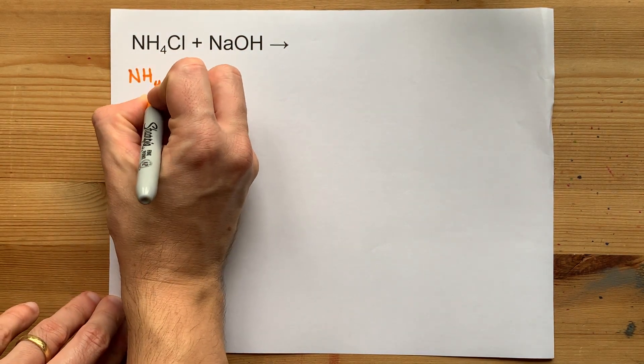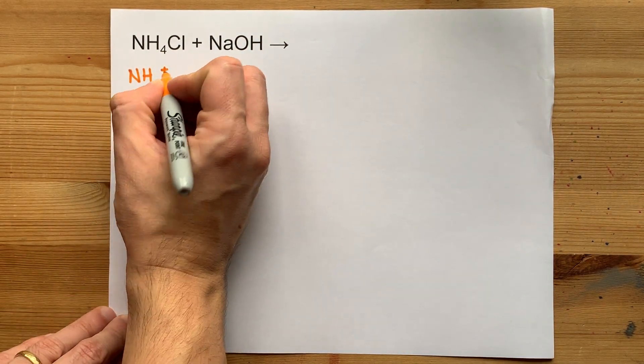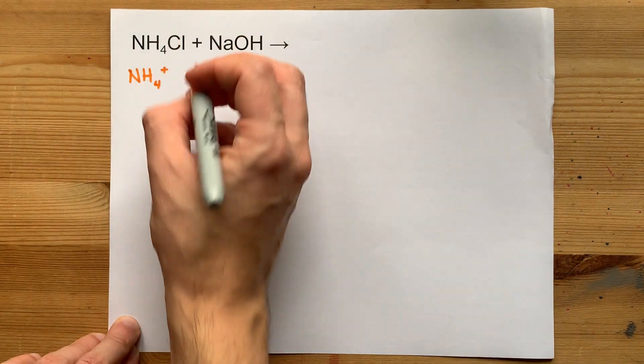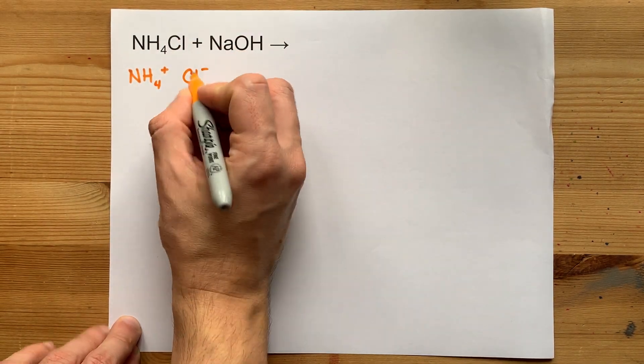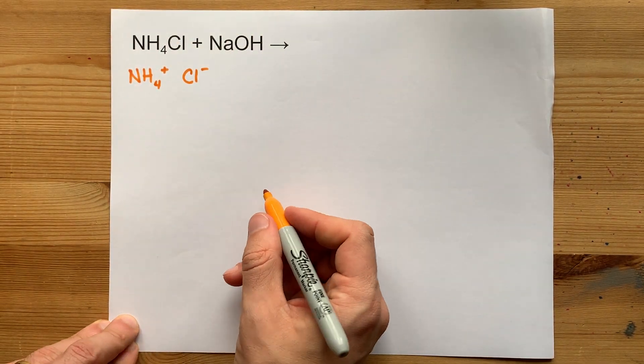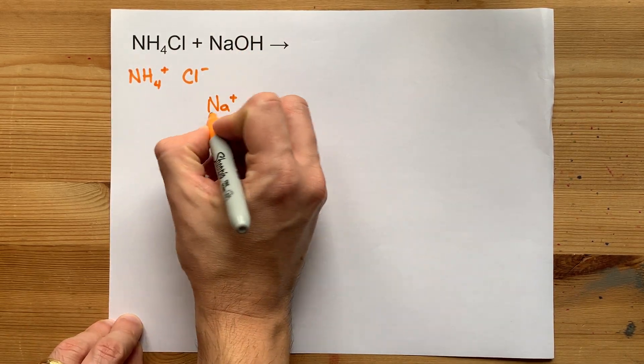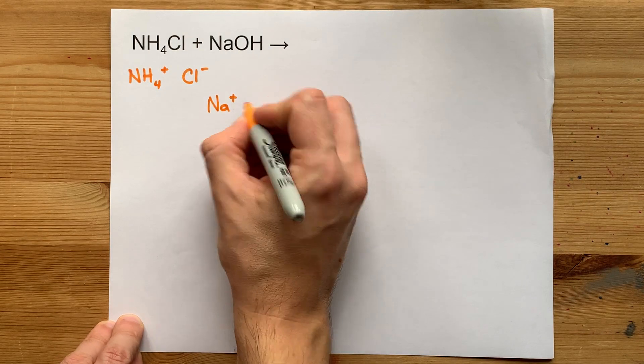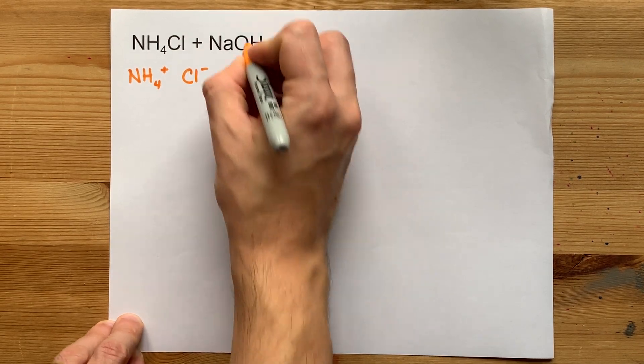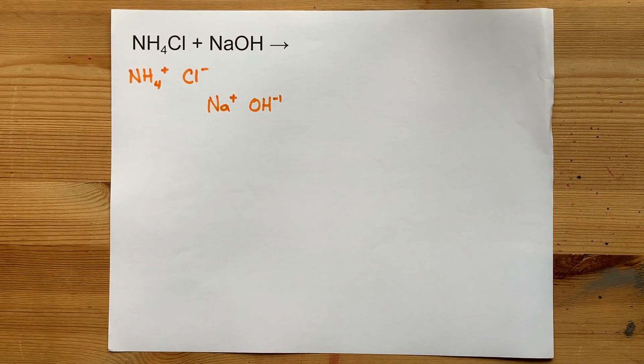This comes from the ammonium ion, which is NH4 with a plus one charge, paired up with chlorine, that's Cl with a minus one charge. Sodium hydroxide is a sodium ion, that's Na with a plus one charge, and hydroxide has a minus one charge.